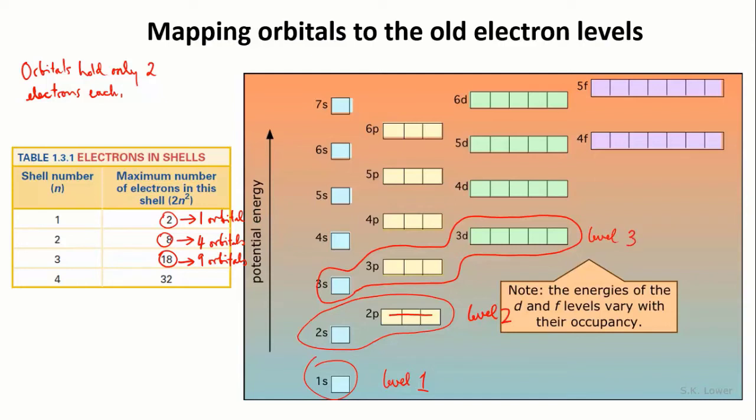You can see there's a pattern here, too. Each level starts with an s orbital, and then it has p orbitals, and then d orbitals, and so on.